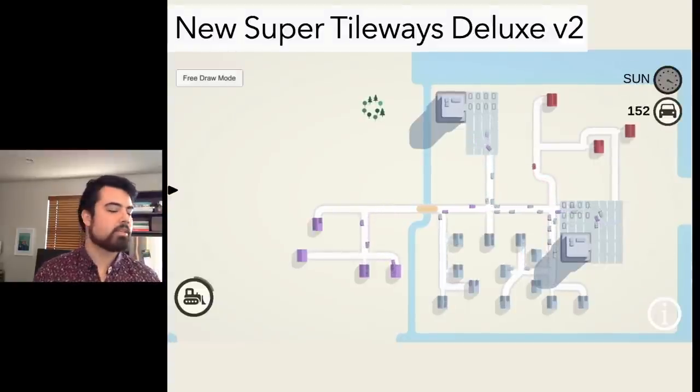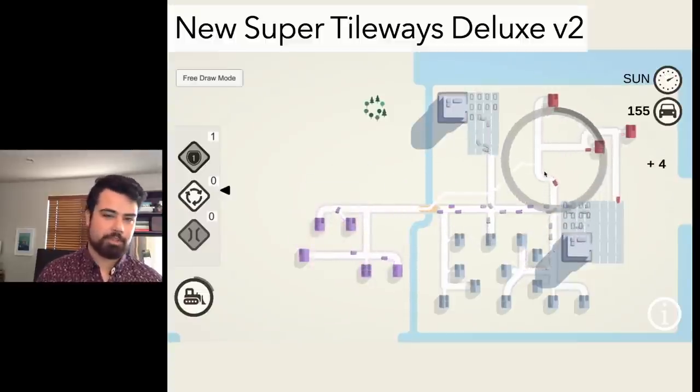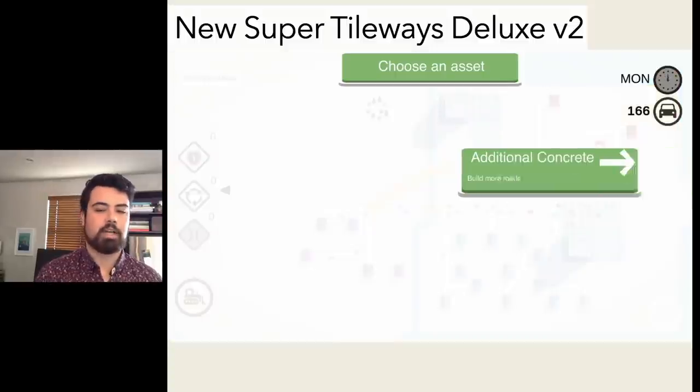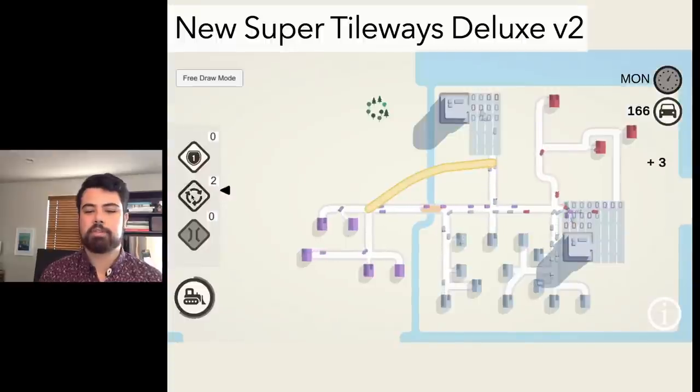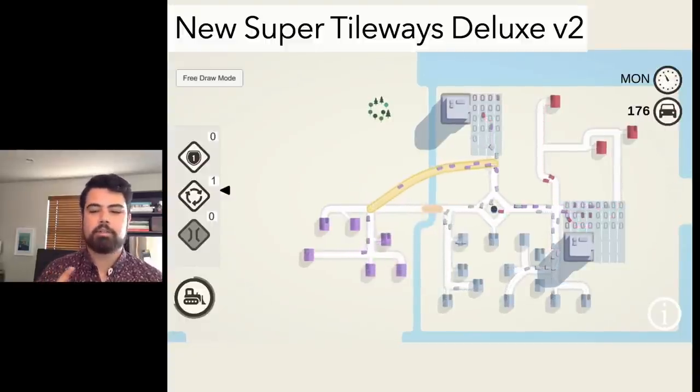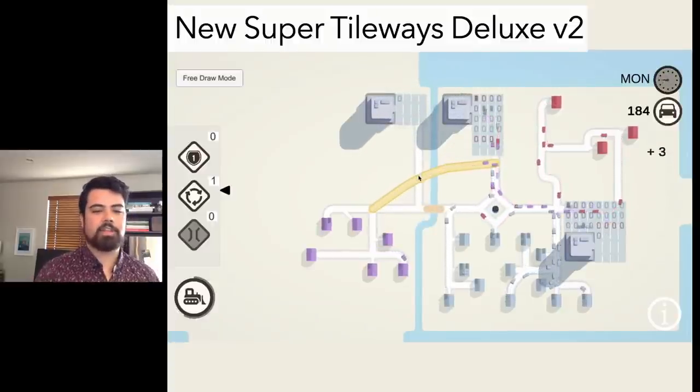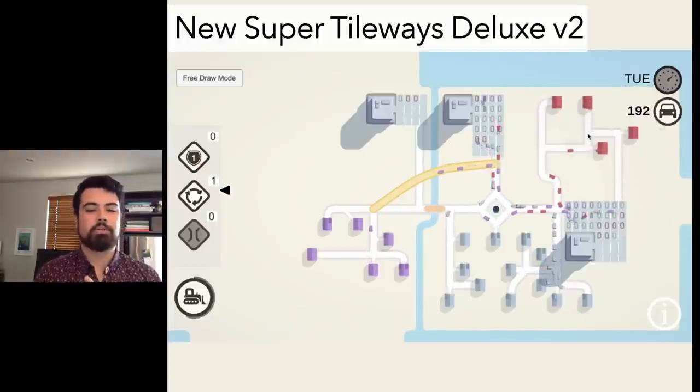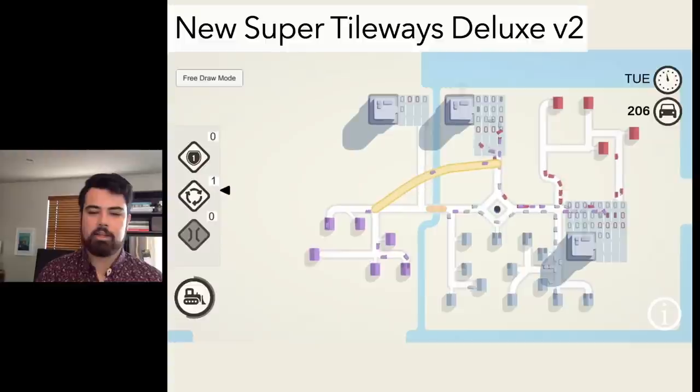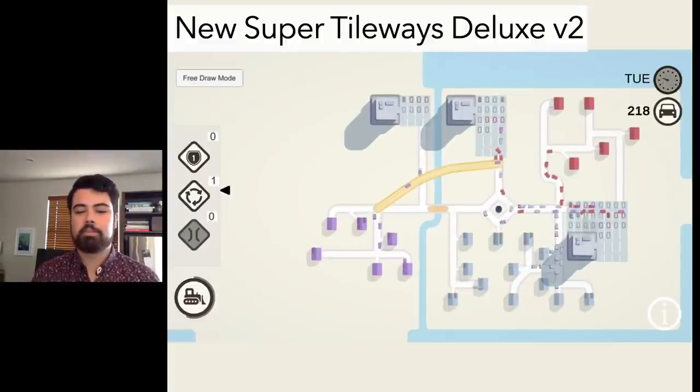This is the final prototype, which is basically just a more polished version of the previous one. We'd created a big list of problems and ranked them based on when we should address them. This involved things like deleting roads would delete cars, or making an X shape on certain diagonals would make roads that weren't actually connected.